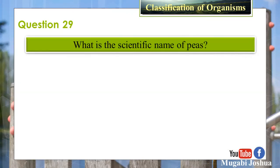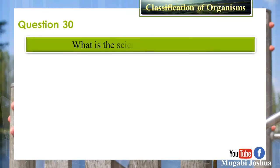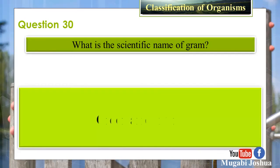Question 29: What is the scientific name of peas? Answer: Pisum sativum. Question 30: What is the scientific name of gram? Answer: Cicer arietinum.